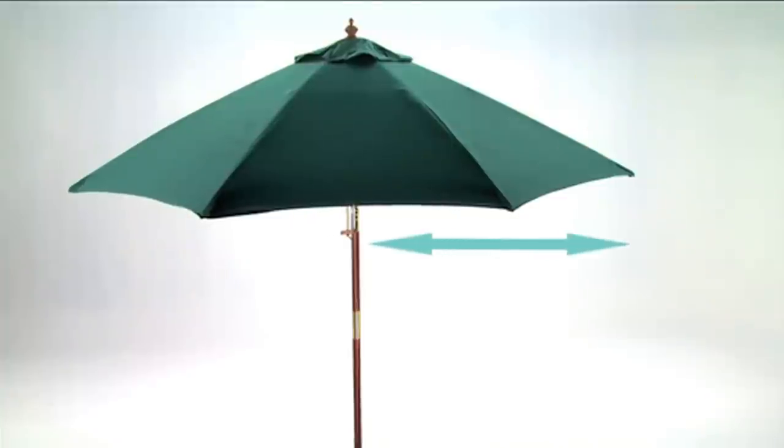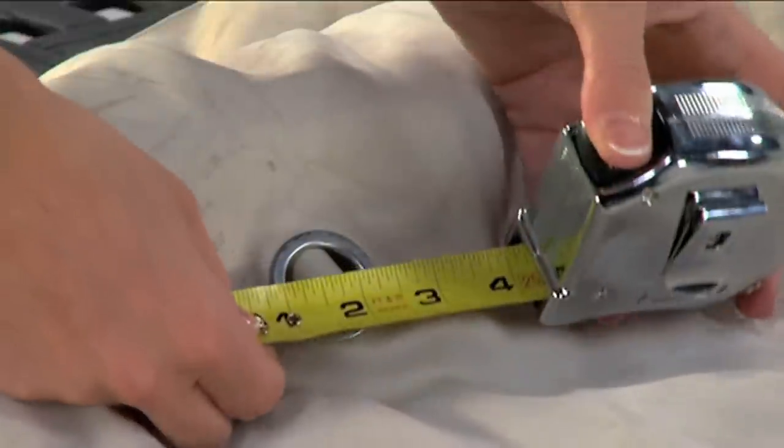This measurement is your umbrella's radius. Doubling this number will provide you with the true and accurate size of your umbrella. For example, an umbrella with a 54-inch radius is considered to be a 9-foot umbrella.